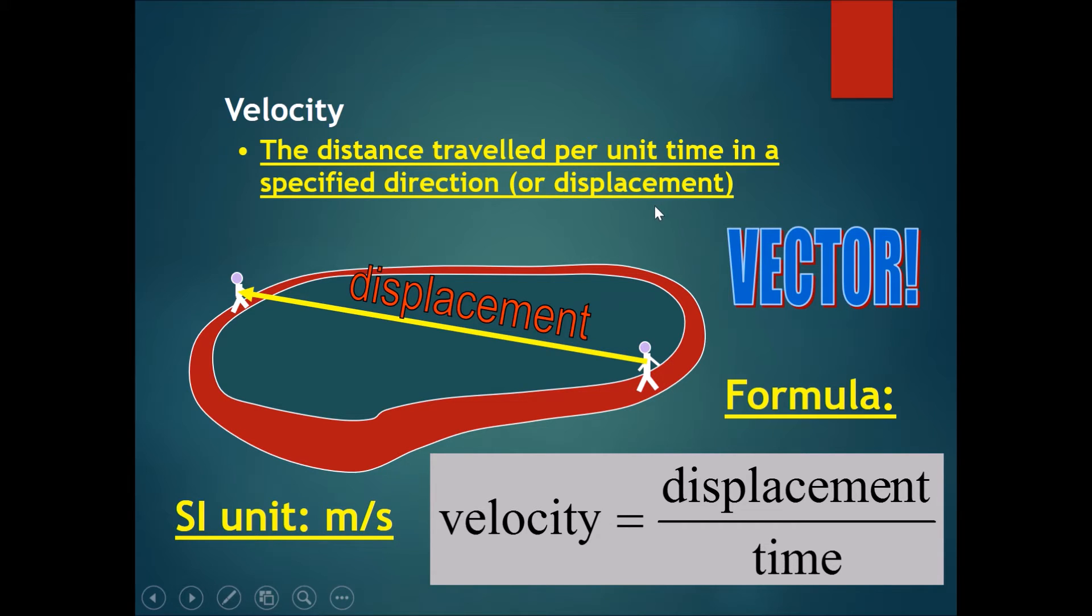So it can very easily be converted to: velocity equals displacement divided by time. The SI unit is the same as speed—meters per second—however, instead of a scalar, this time this would be a vector because displacement is a vector with both magnitude and direction.